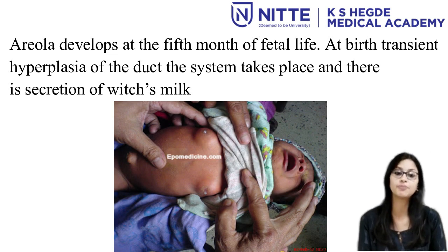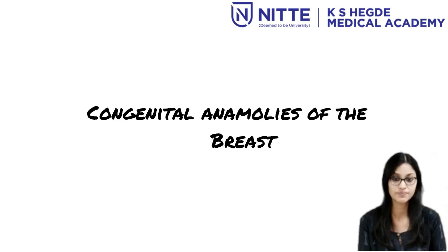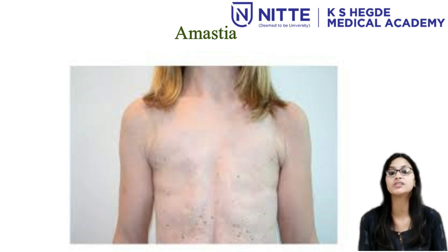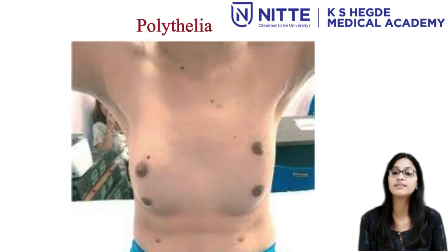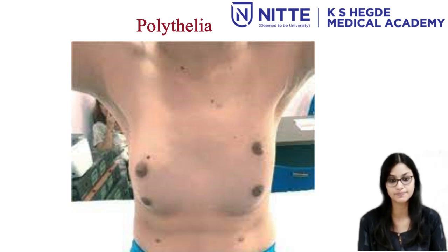At birth, there is transient hyperplasia of the duct system and secretion of witch's milk takes place. This happens by the combined action of fetal prolactin and maternal estrogen. Regarding congenital anomalies of the breast: amastia is a condition where there is bilateral agenesis of the mammary glands, but this condition is very rare.